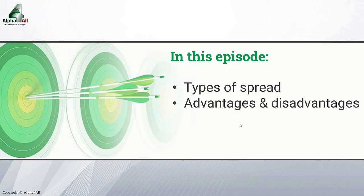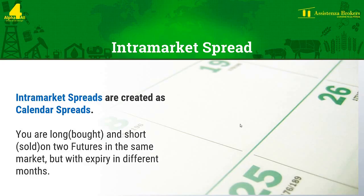The first type of spread is known as an intra-market spread, and these are normally created as calendar spreads. As ever, there are two parts to the spread — you go long in one where you buy a future, and short in the other where you sell a future. In an intra-market spread you are trading on futures from the same market but with an expiry in different months. As an example, I buy a wheat future expiring in July and simultaneously sell wheat — the same raw material — but with the expiry in December. The spread position will run until the expiry of the nearest contract or until I close it.